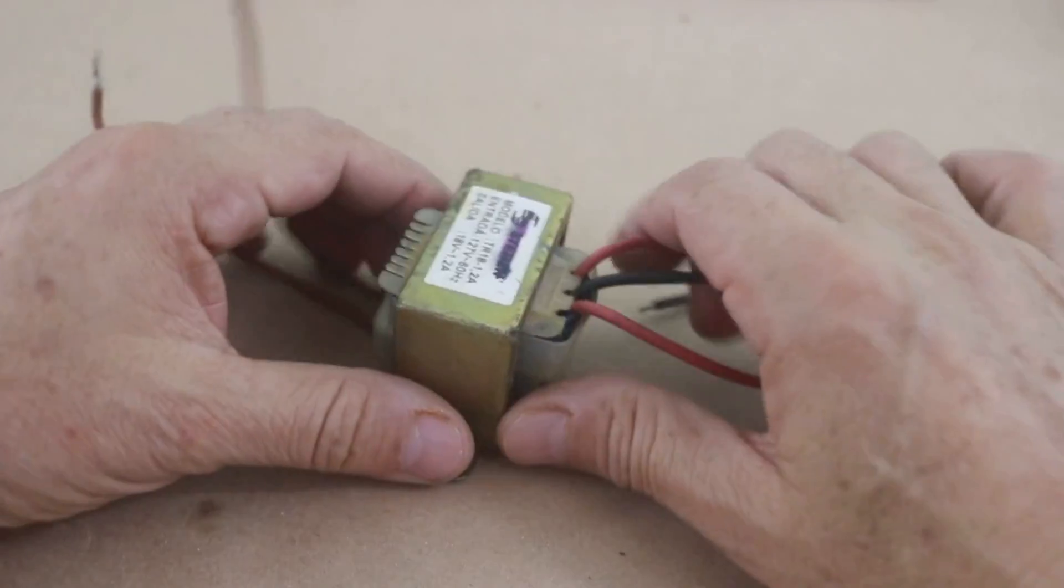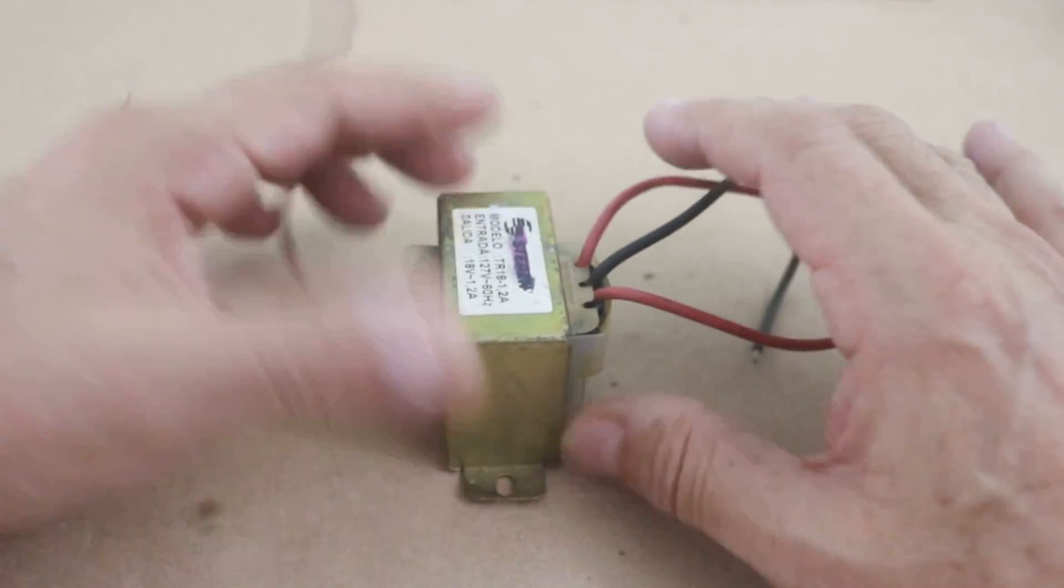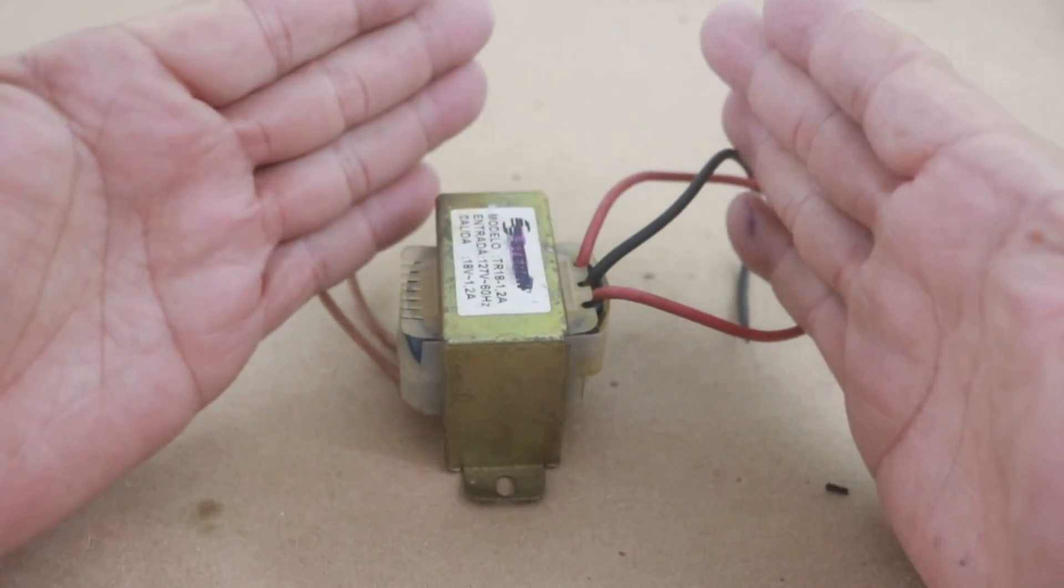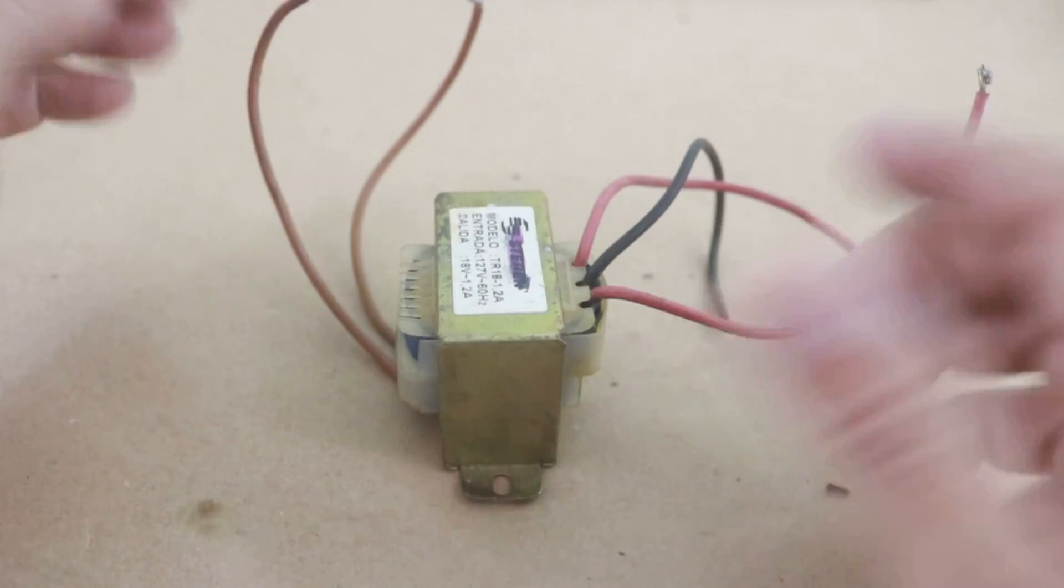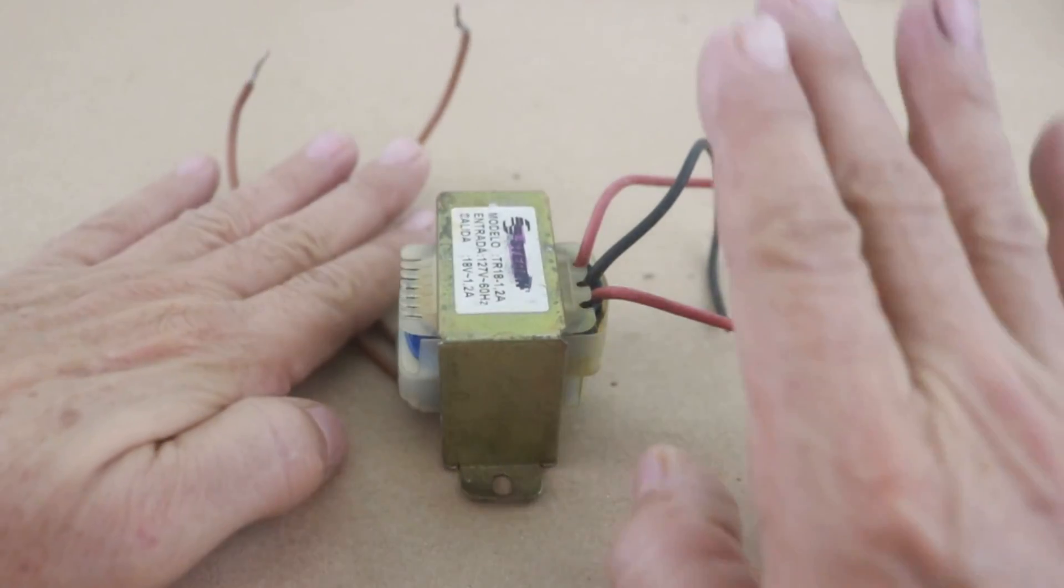The transformer has a great advantage and it is that it is isolated. One coil is independent from the other. There is no electrical connection between the primary and the secondary.